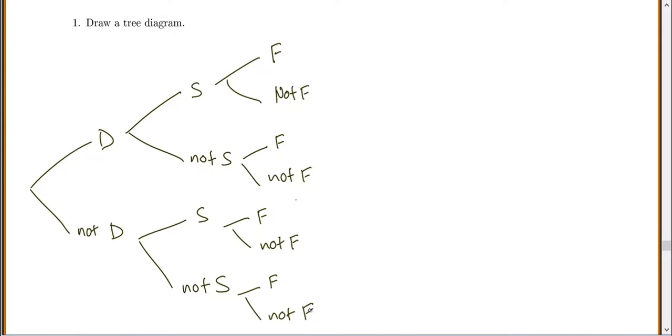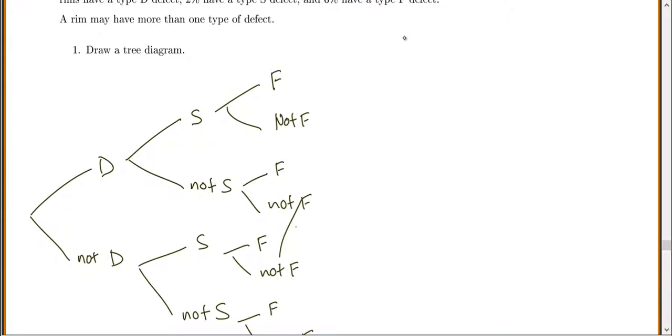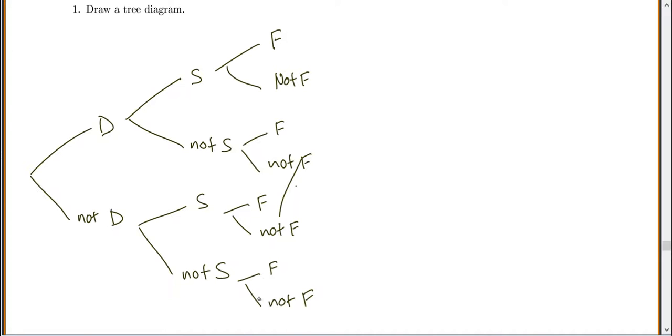When you're doing probability trees, this is a nice, easy way to figure out some complex probabilities. You go through and say, what was the probability of getting a D defect? D has a probability of 4%, S has 2%, and F has 6%. To get a D, that would be 4%, and to not get a D would be the complement, 1 minus that is 0.96. To get an S, that's 2%, so 0.02, and not S would be 0.98.